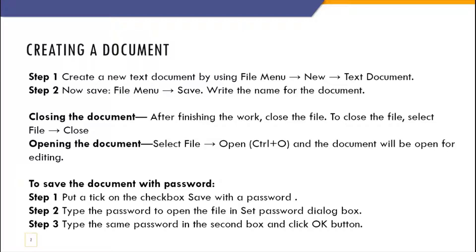Let's take these topics one by one. Creating a document: there are two steps. First, click on the File menu, then click on New and select the Text Document option. Once you have created a document, you can save it by clicking on the File menu again and then writing the name for that particular document.